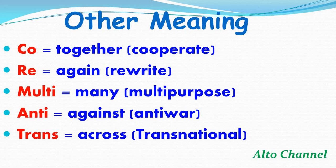And then the next one is 'anti', meaning against. For example, 'anti-war' — that you are against war, you don't agree with war. And then the last meaning here — it can be across, with the prefix 'trans'. For example, 'transnational' — it refers to activity between two or more countries.